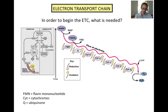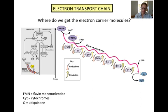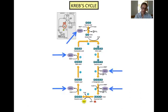As a refresher, what is needed in order to begin the electron transport chain? The electron carrier molecules NADH and FADH2 are needed. And where do these molecules come from? NADH and FADH2 are made during the Krebs cycle, which is also referred to as the citric acid cycle or the tricarboxylic acid cycle.